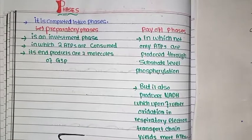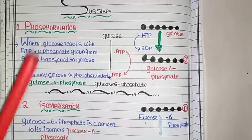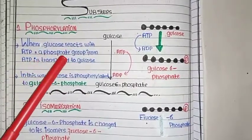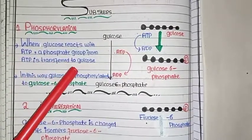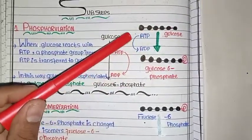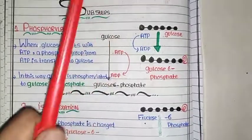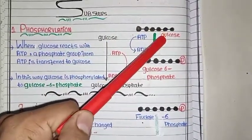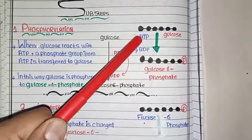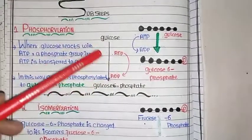The first step of glycolysis is phosphorylation. In phosphorylation, glucose reacts with ATP and a phosphate group from ATP is transferred to glucose. Glucose is a 6-carbon molecule and ATP provides energy. We break down ATP and the phosphate from ATP is attached to glucose. This process is called phosphorylation.